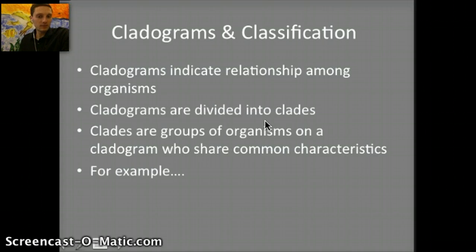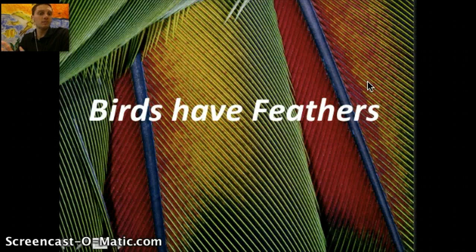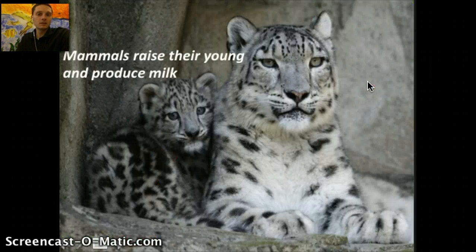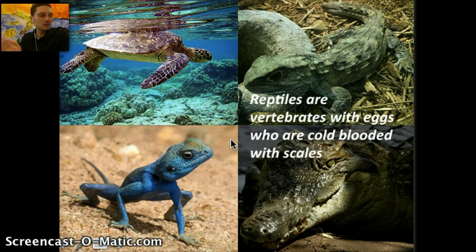To finish up: cladograms and classification can indicate relationships among organisms. Cladograms are divided into clades — groups of organisms on a cladogram who share common characteristics. For example, birds have feathers; mammals raise their young and produce milk; and reptiles are vertebrates with eggs, cold-blooded with scales. All organisms within those groups share those things in common. That's it for this section on phylogeny and systematics.